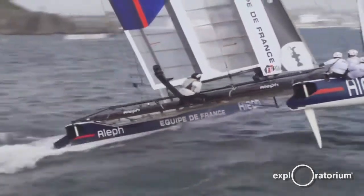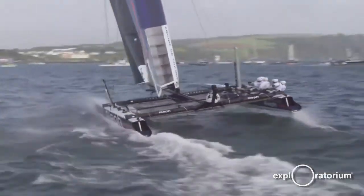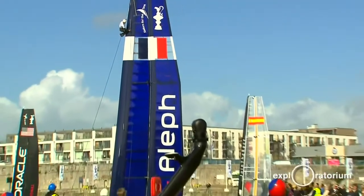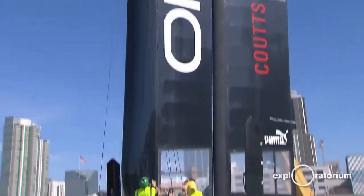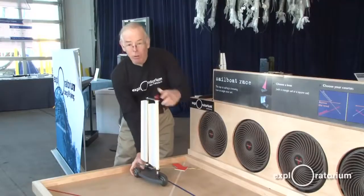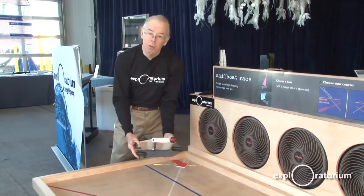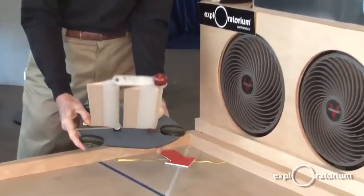It's only a short step to go from thinking about the soft sail as a wing to thinking about a wing sail. And that's what the America's Cup has done. Here is a boat in which the soft fabric sail has been replaced by a stiff wing sail.